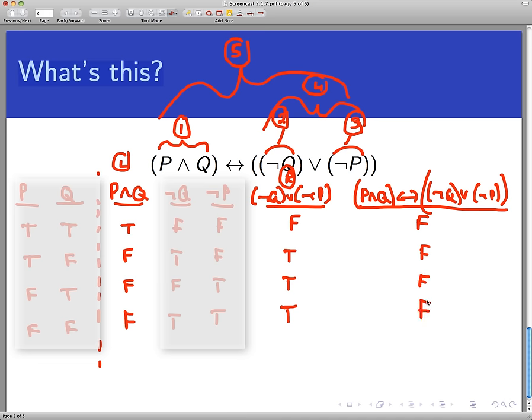So what we have here kind of confirms our intuition. We said that P and Q being true means that both of these guys are true. Both P and Q are true. There's no way that either one of these could be false, and that's indeed what we're seeing here. In no sense and in no situation is the statement P and Q equivalent in any way to not Q or not P.